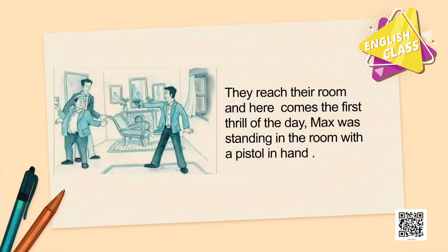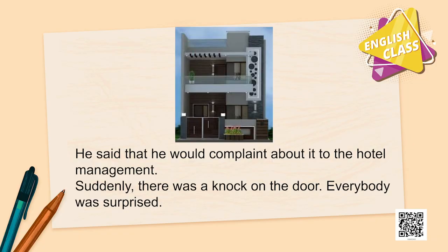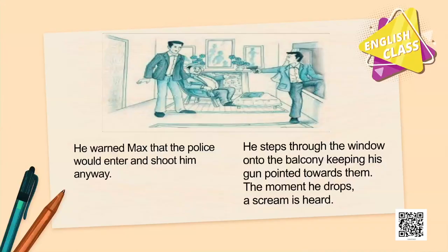They reach the room and here comes the first thrill of the day — Max was standing there with a pistol in hand, aiming at both of them. Ossible is surprised and wants to know how Max was able to enter the room. He was very angry, as this was the second time someone had entered his room from the common balcony shared with the next room. He said he would complain to the hotel management. Suddenly there is a knock on the door. Ossible warns that it must be the police, whom he had called for security. Max threatened to shoot unless Ossible got rid of the police, then stepped through the window onto the balcony keeping his gun pointed at them.